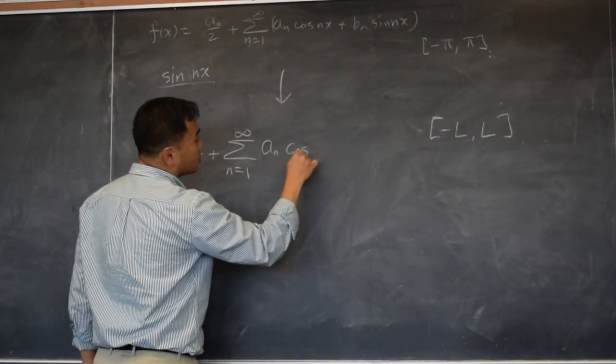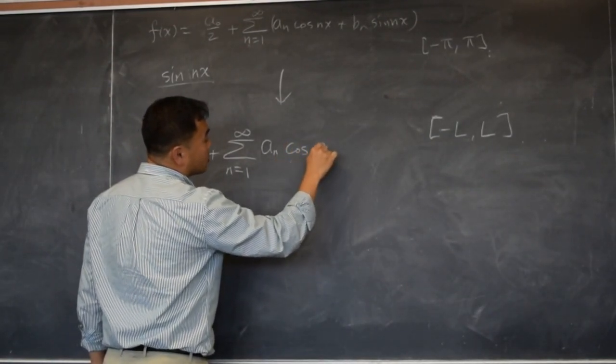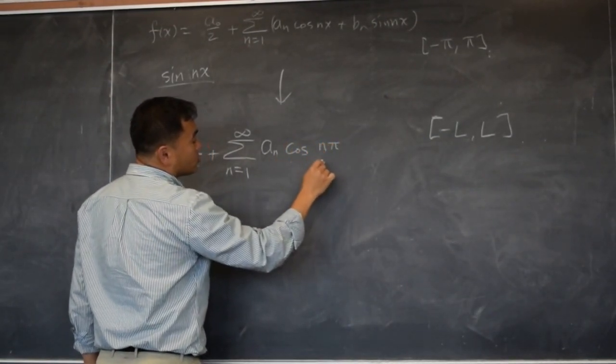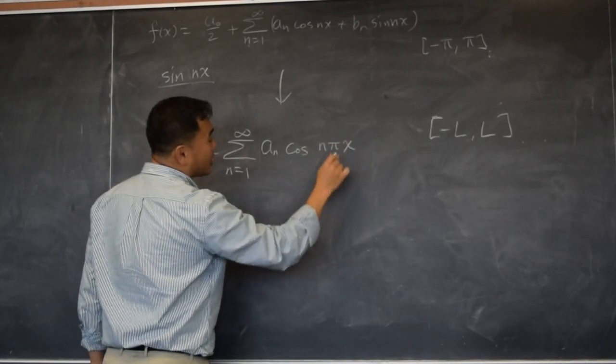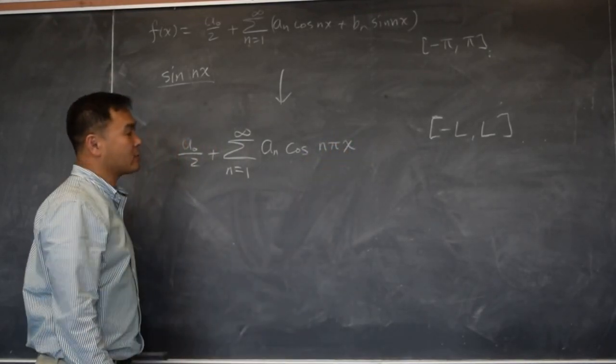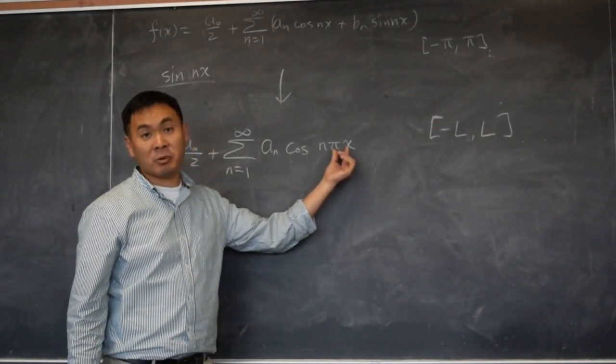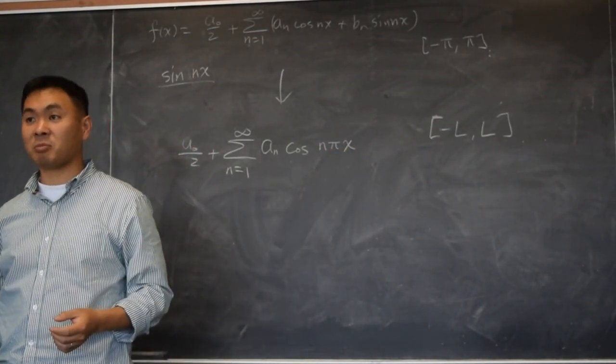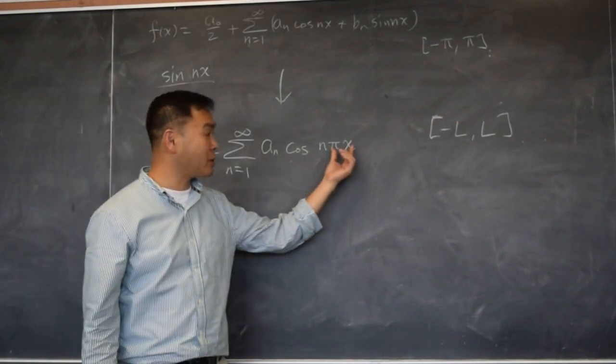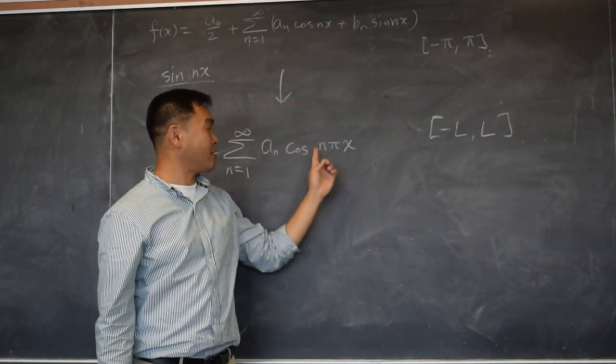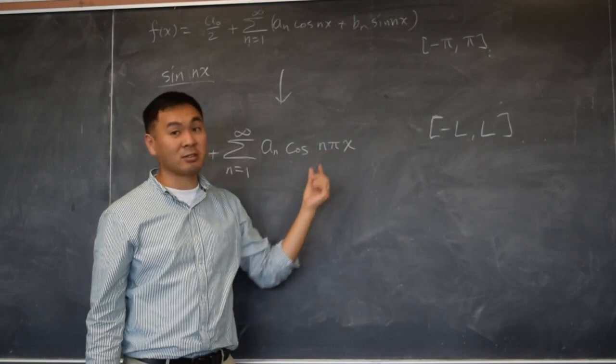First, you want to multiply by pi over x. What happens if you replace x by pi x? Do you know what happens to the graph if you replace x by pi x? I have nx, now I have n pi x. What's the result of putting this pi?